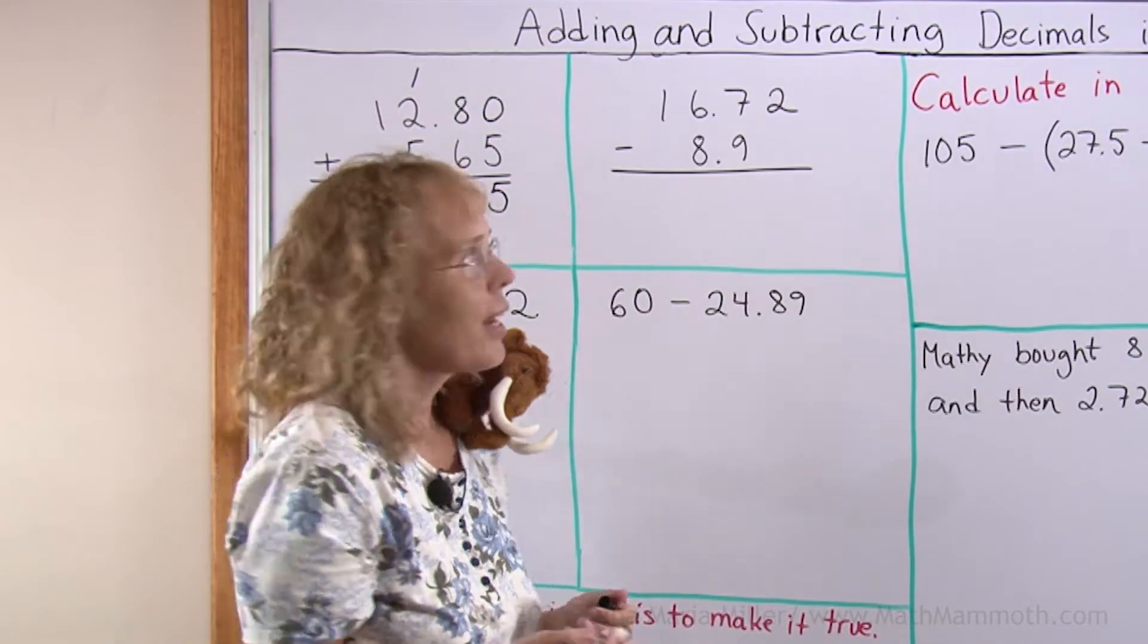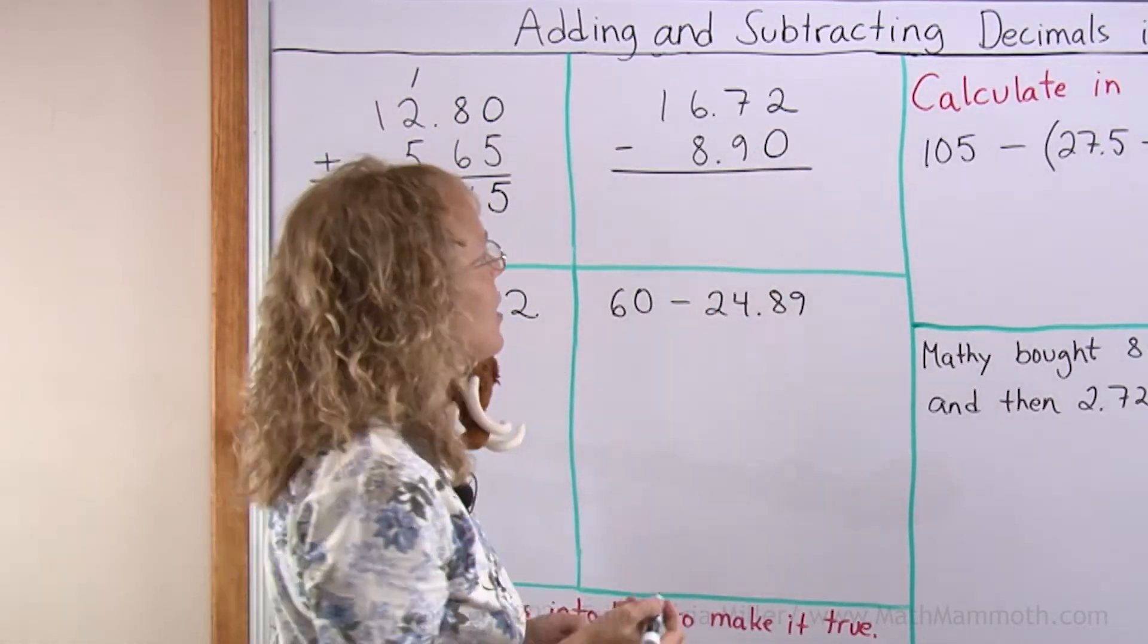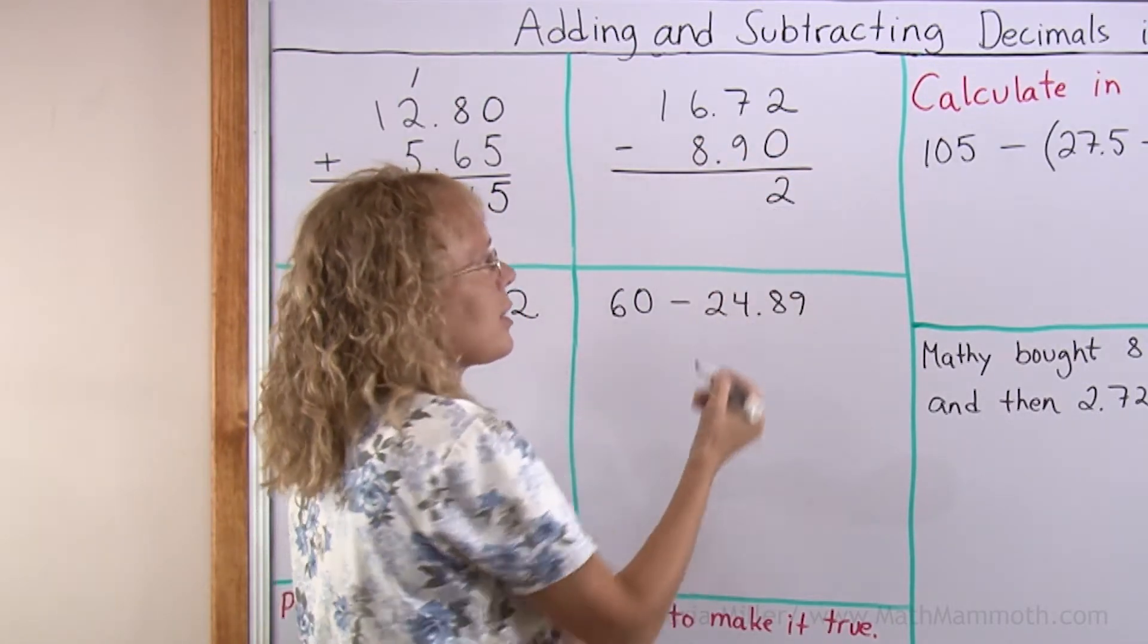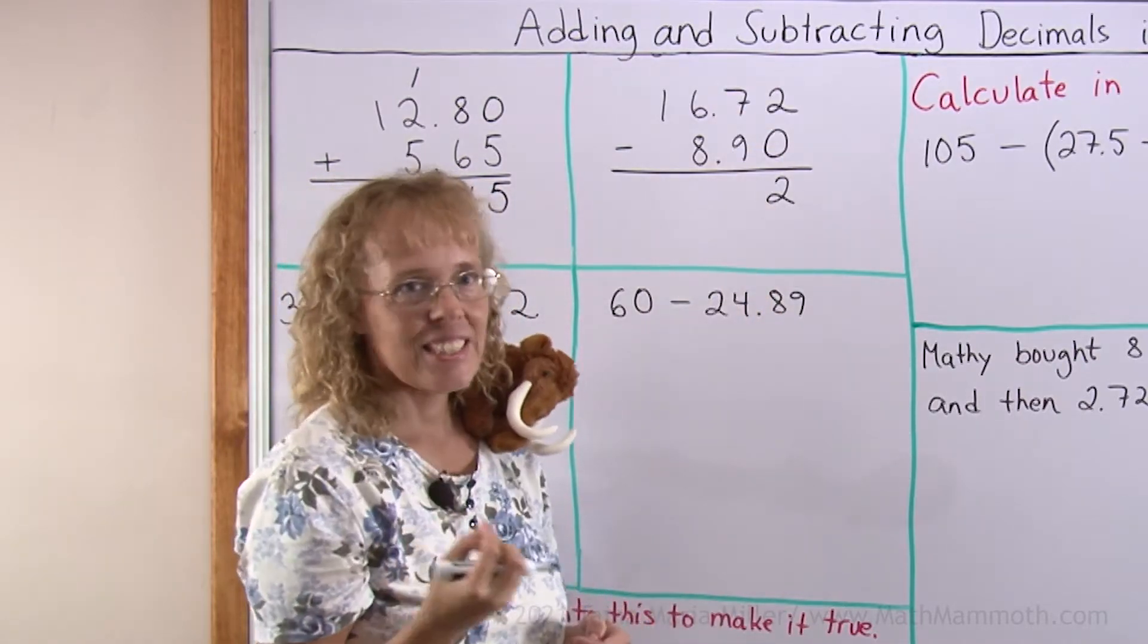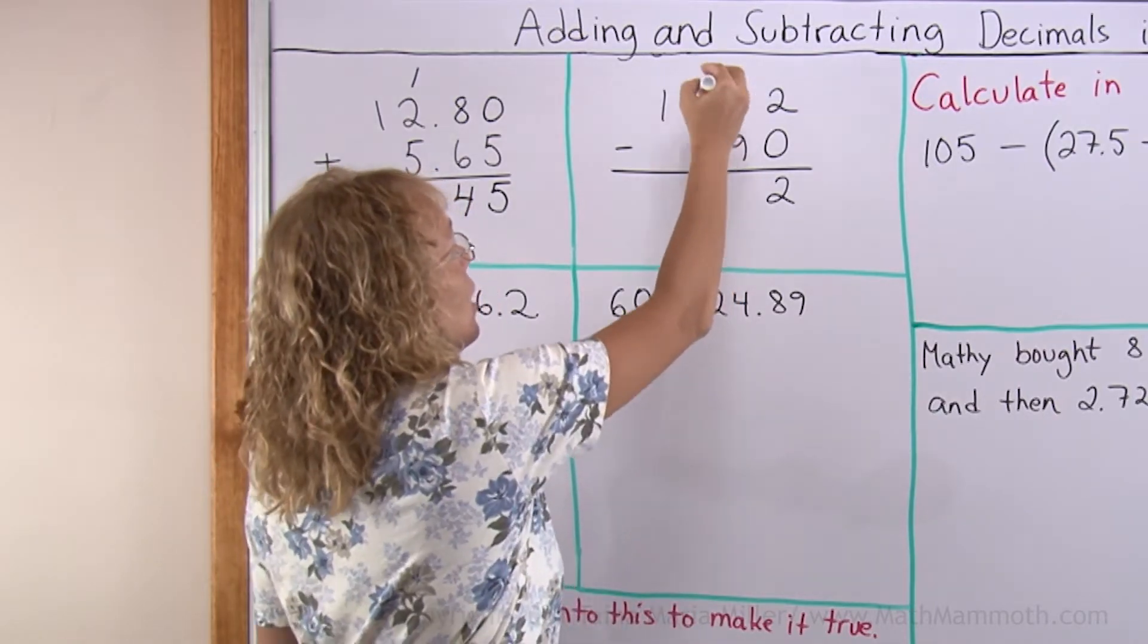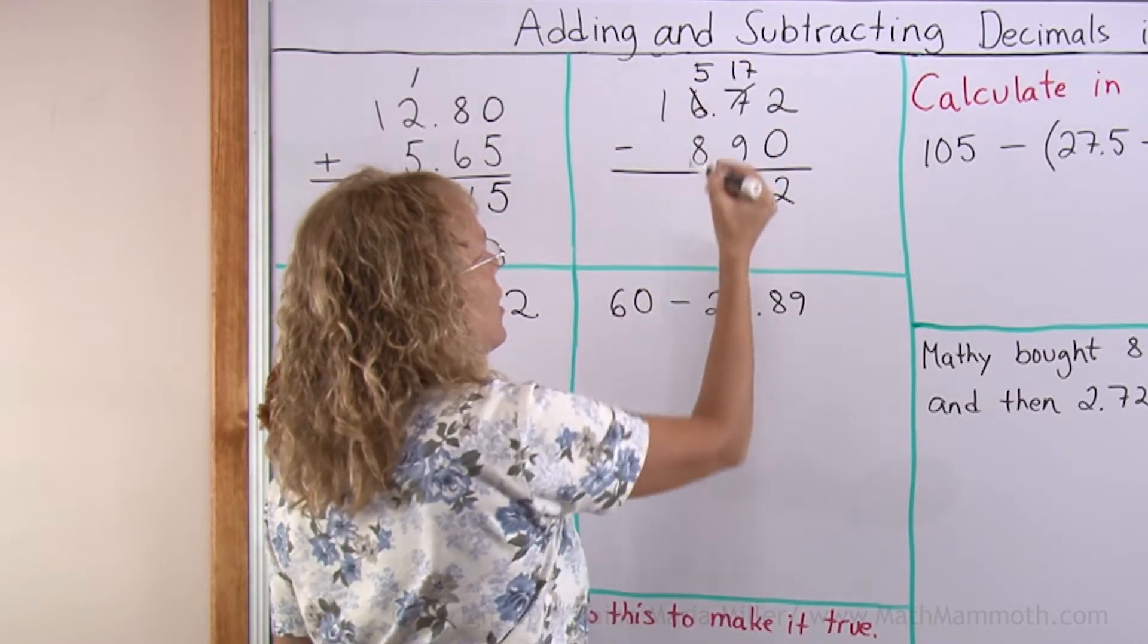Subtraction works the same way. Again, I can add a zero here so that it is easier to subtract. Two minus zero is two and that is in the hundredths column. And then this column would be the tenths column. Seven minus nine I cannot do, so I will regroup.